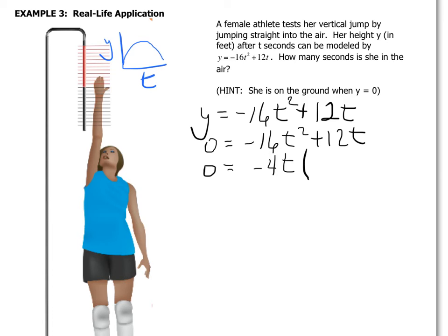-16t² divided by -4t is going to give me 4t. 12t divided by -4t is -3. So just make sure you're careful on that. Remember you can always use your distributive property and check this. -4t times 4t is -16t². -4t times -3 is your 12t.